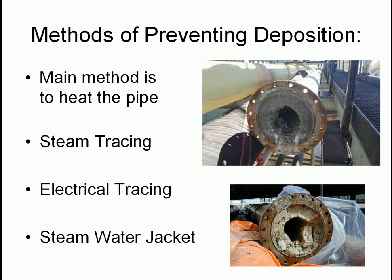Now we're going to look at methods of preventing deposition. The main method is to heat the pipe - that's all they do. To heat them up we've got three methods: steam tracing, where a steam pipe on the outside generates heat with a jacket around the pipe to distribute heat evenly; electrical tracing; and steam water jacket tracing, where steam or hot water is pumped through a jacket around the pipe. This is good for short distances but gets horrendously expensive over long distances.